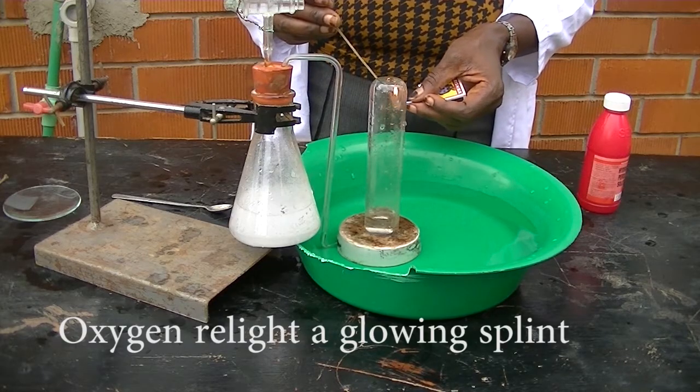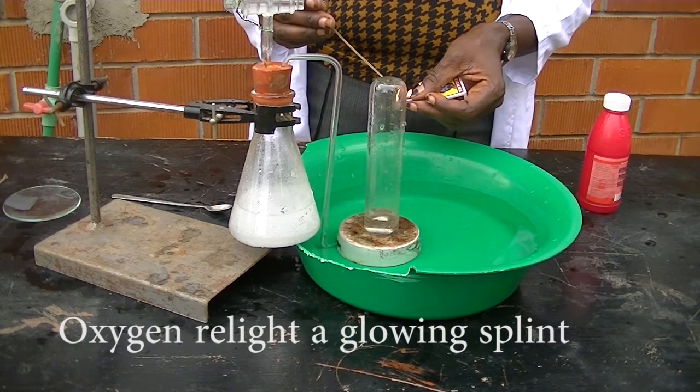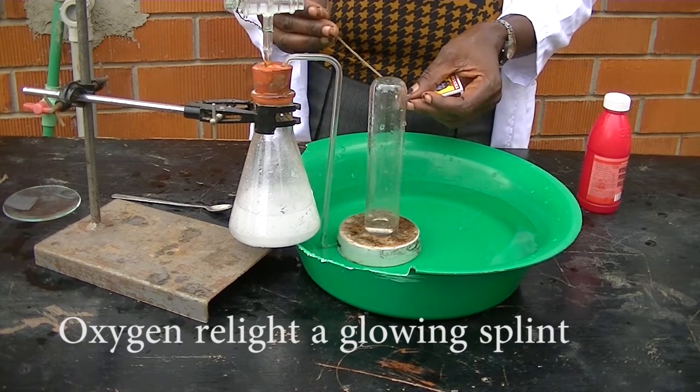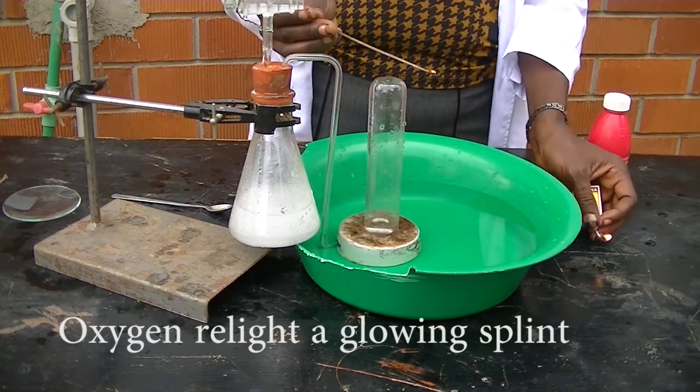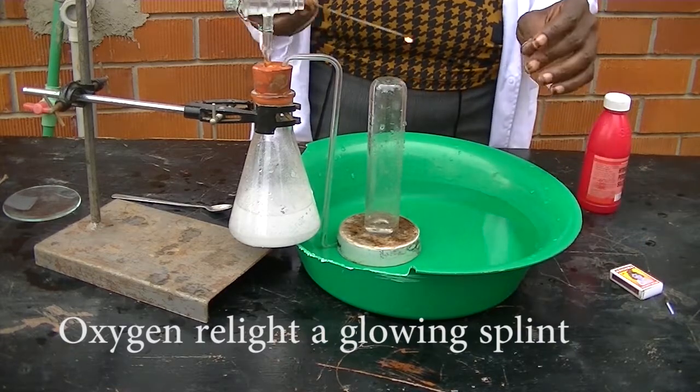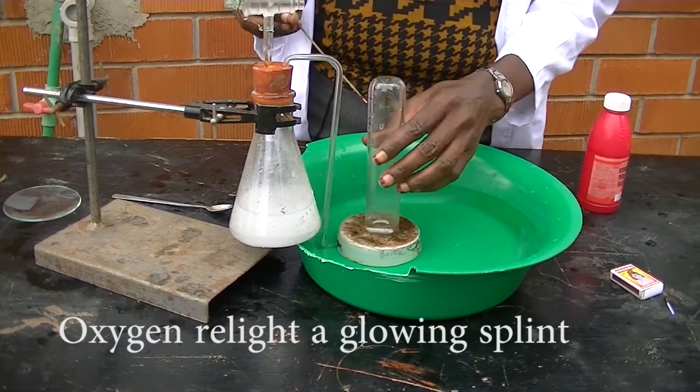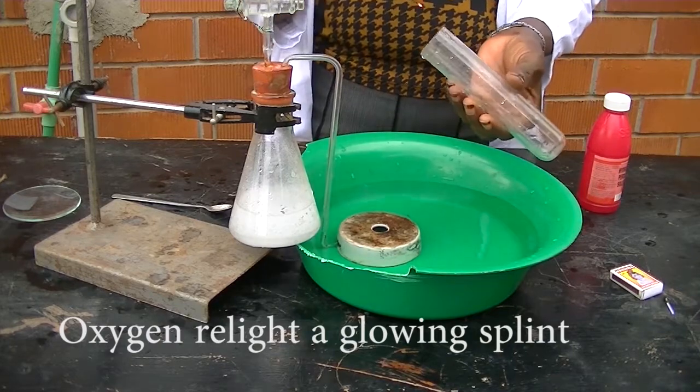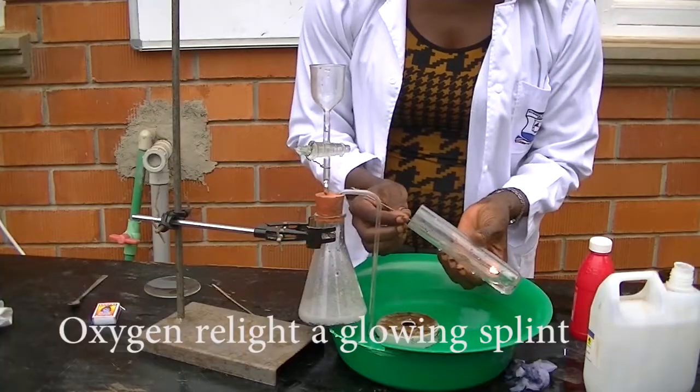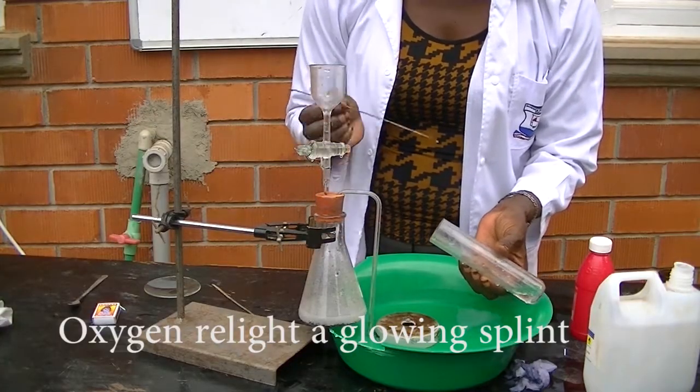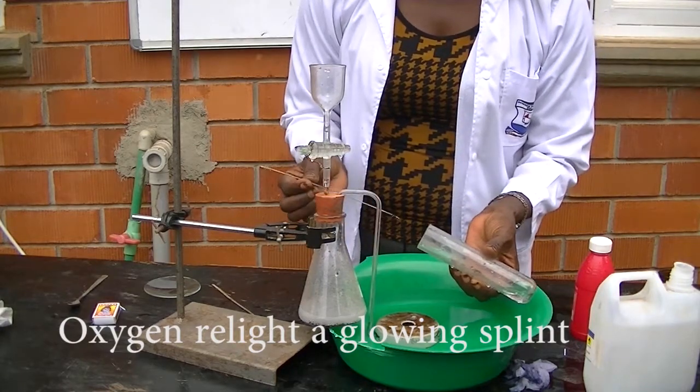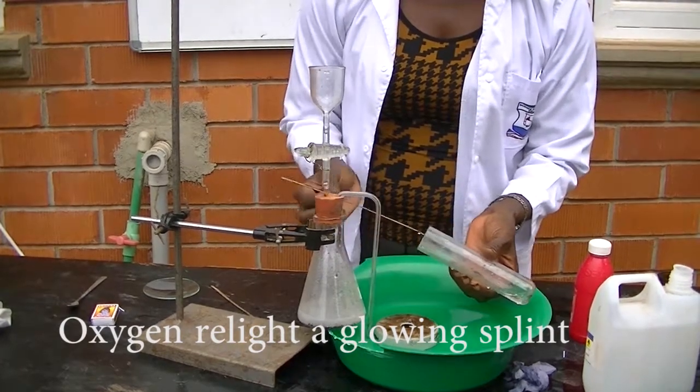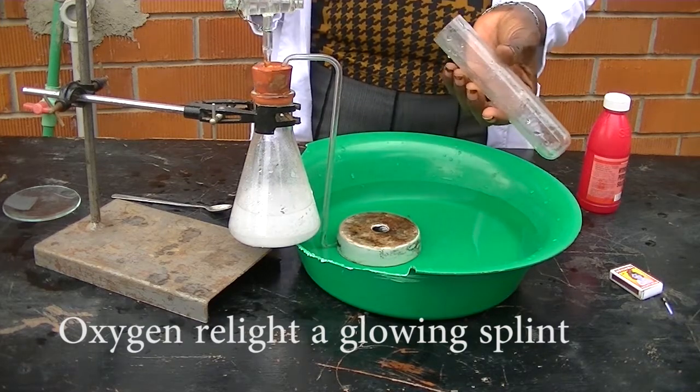How do you test for the gas? We insert a glowing splint. A glowing splint is the one without a flame. This is a burning splint. The glowing splint is without a flame. So the glowing splint is relighted as it is inserted into the gas.